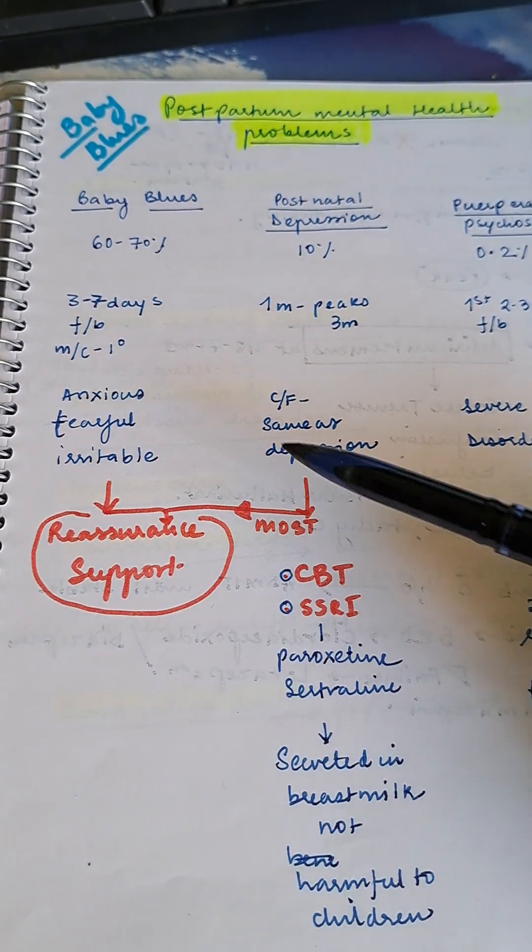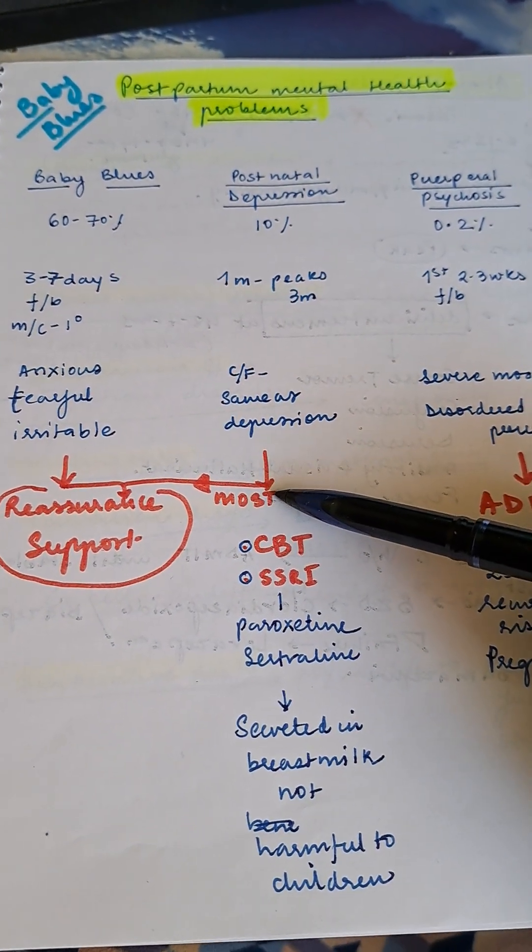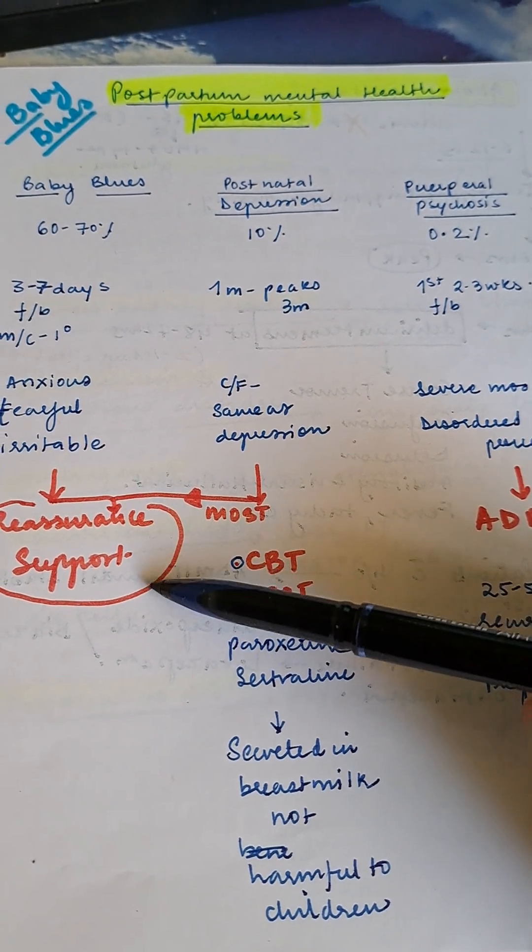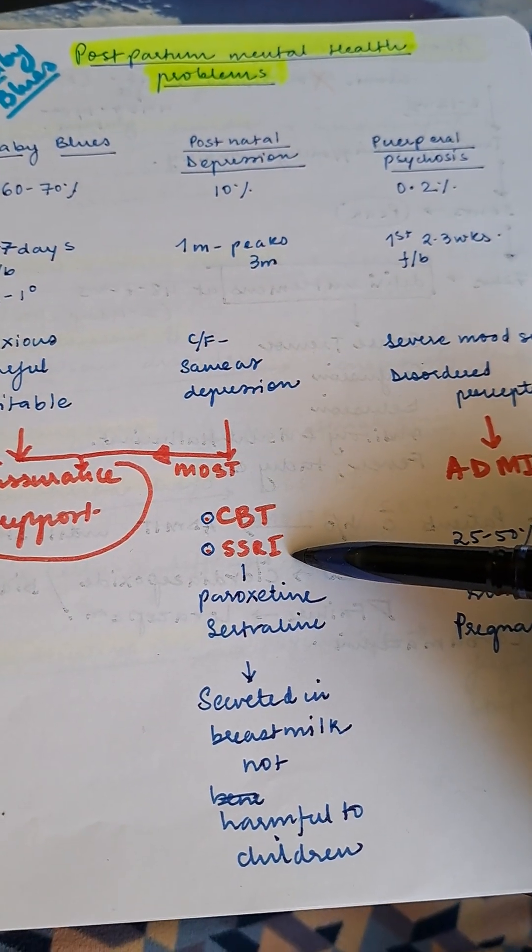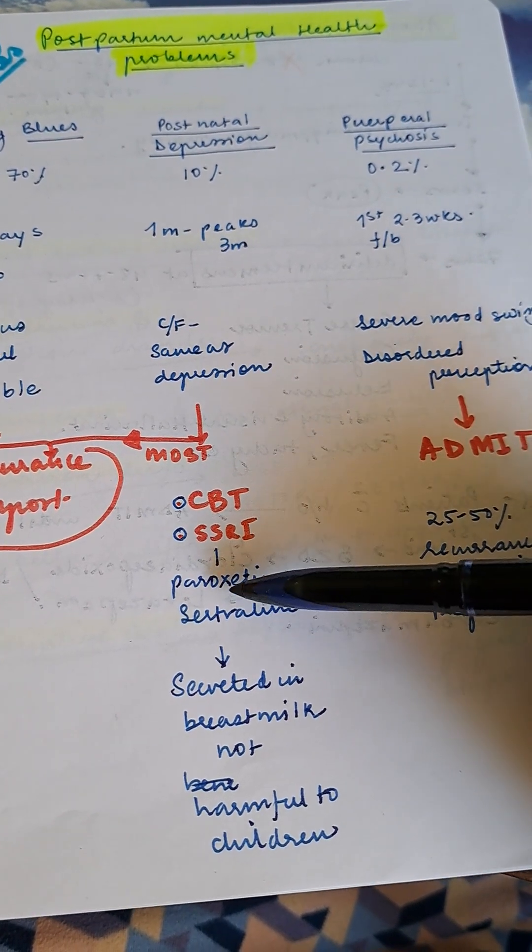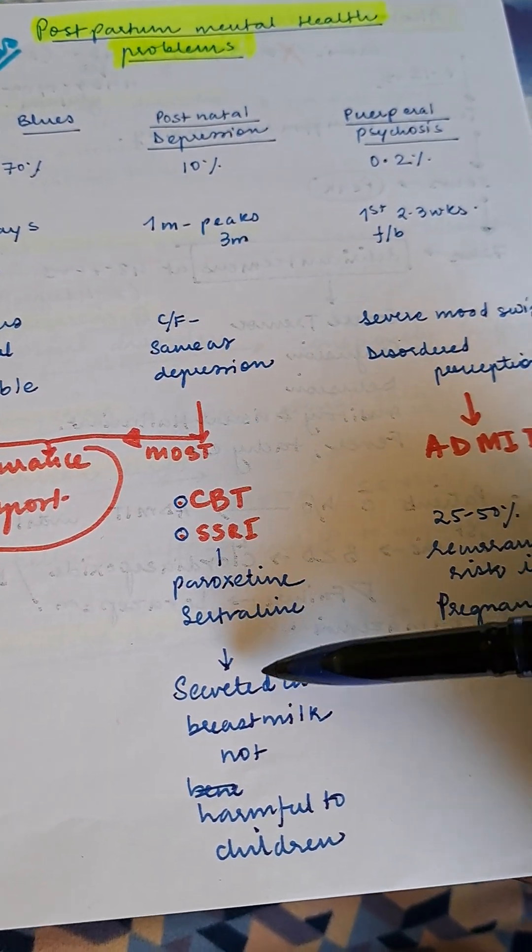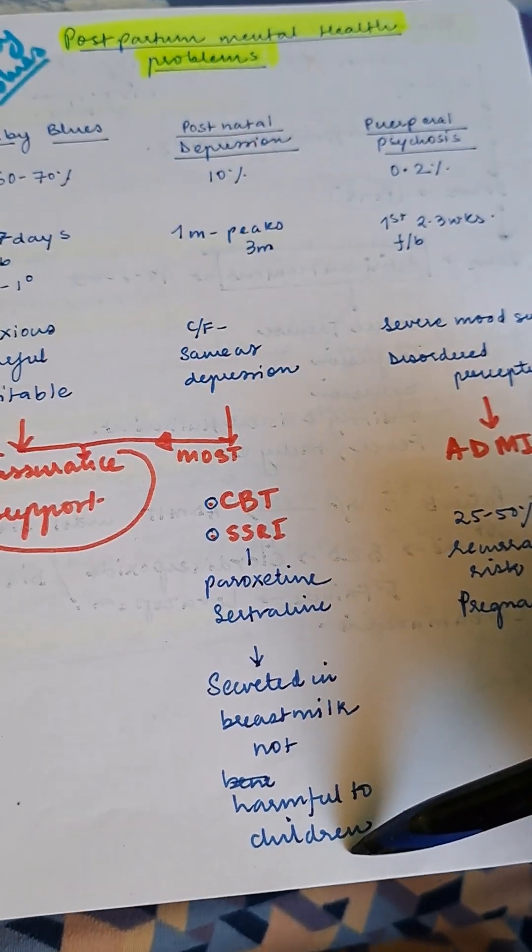If postnatal depression is not recovering with reassurance and support, give trial of CBT or SSRI. For SSRI, give paroxetine and sertraline. These are secreted in breast milk but not harmful to children.